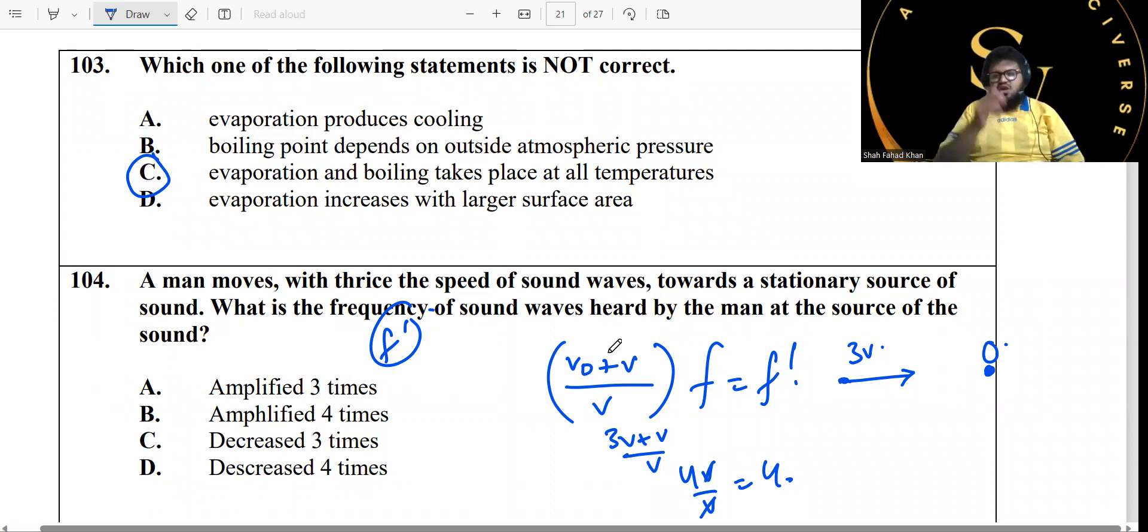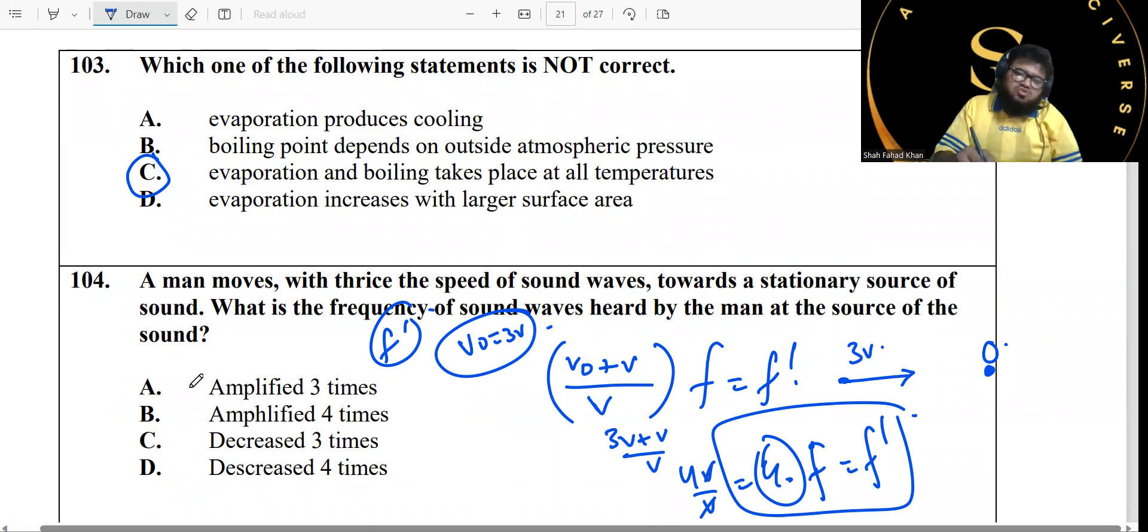So it's observer velocity plus the velocity of sound divided by, because the source is stationary, just the speed of sound. We already know that the observer has a speed twice the speed of sound. It's 2v plus v, which is 3v over v, which cancels out. You're just left with 3. So the apparent frequency is 3 times the actual frequency. It's amplified 3 times.